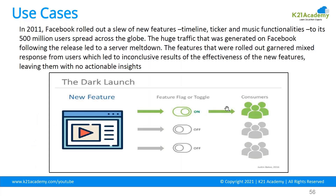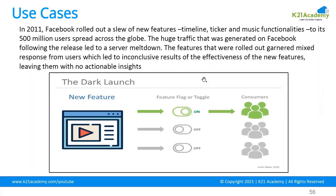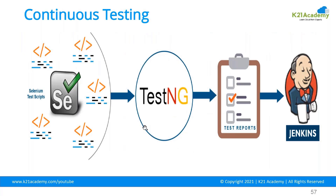Every company makes changes in the back end and then releases to the front end. For example, beta versions mean they are testing first — they release a beta version, give access to promotional users, collect feedback, modify, and then release to production. This is an example of a dark launch technique — that is how you use CI/CD. For continuous testing, you can either use separate tools or integrate them all with Jenkins.